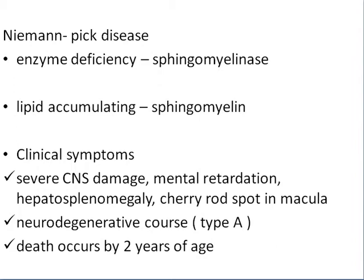Niemann-Pick disease is caused by a deficiency of the enzyme sphingomyelinase, causing accumulation of sphingomyelin. Clinical symptoms include severe central nervous system damage, mental retardation, hepatosplenomegaly, and cherry-red spots in the macula. Neurodegeneration occurs, with death by two years of age in Type A.